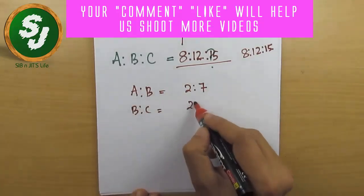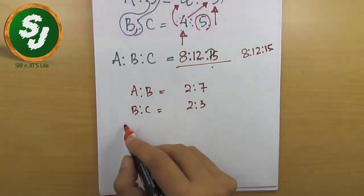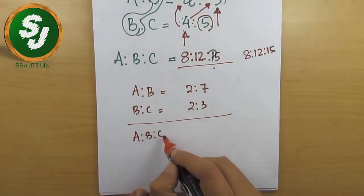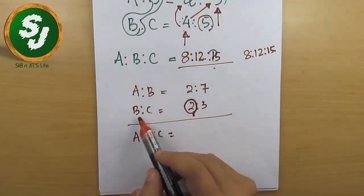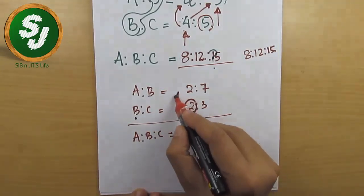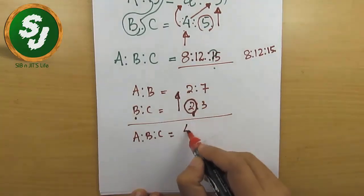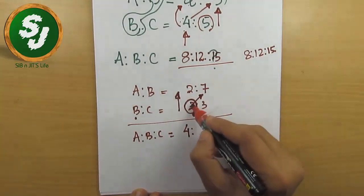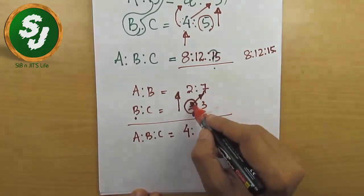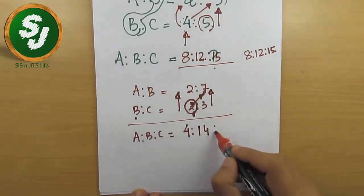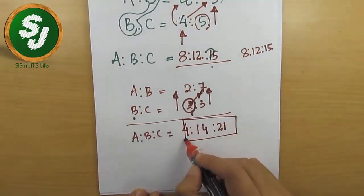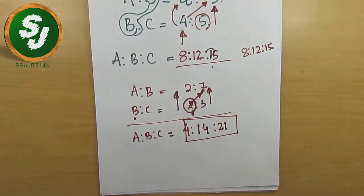Another example: a:b = 2:7 and b:c = 2:3. Find a:b:c. Pick the second ratio's first number, which is 2. Multiply: 2×2 = 4, then 2×7 = 14, then 3×7 = 21. So a:b:c = 4:14:21.